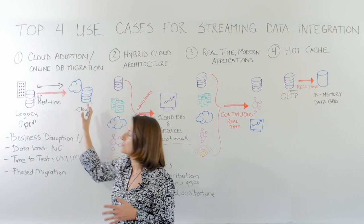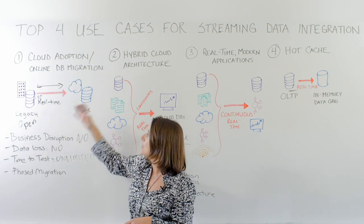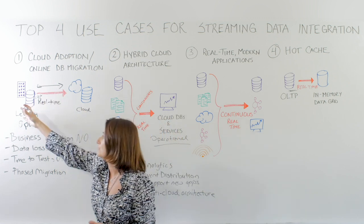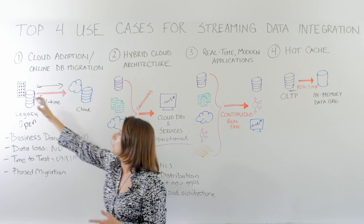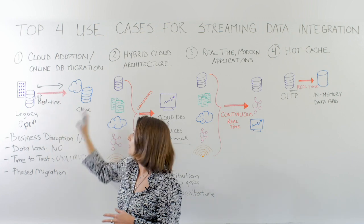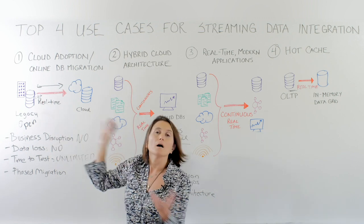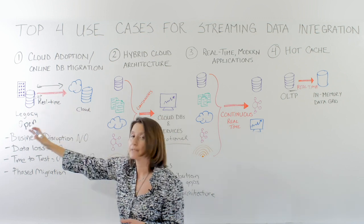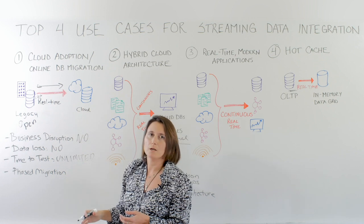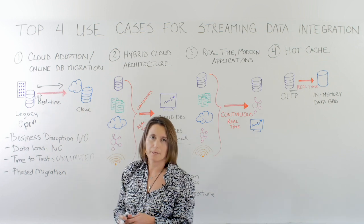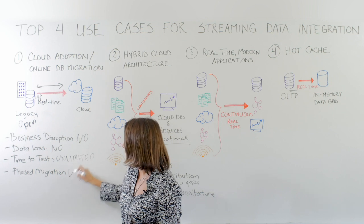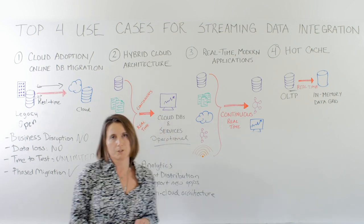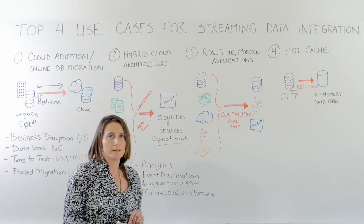So you can have both systems open to transactions. Once you test this, you can run some of your users in the cloud and some in the legacy database, with all changes synchronized so that the databases are constantly in sync. You can gradually move your users to the cloud database to further minimize your risk. Phased migration is a very popular use case, especially for mission-critical systems that cannot tolerate risks and downtime.